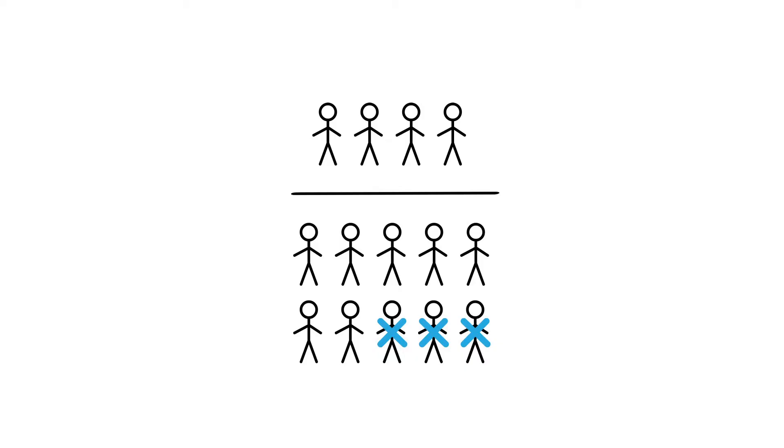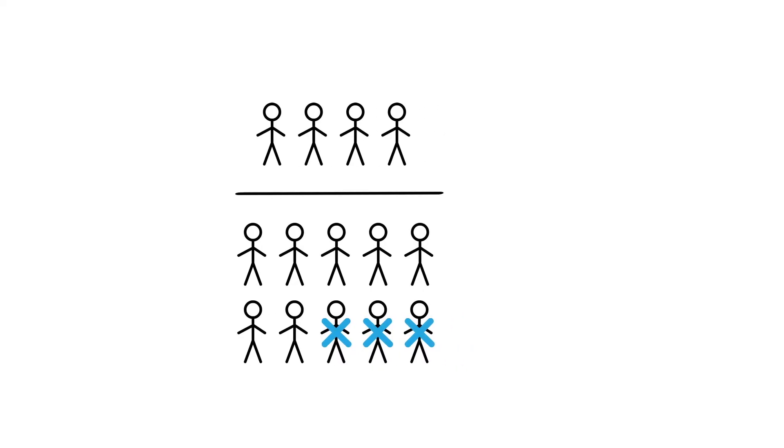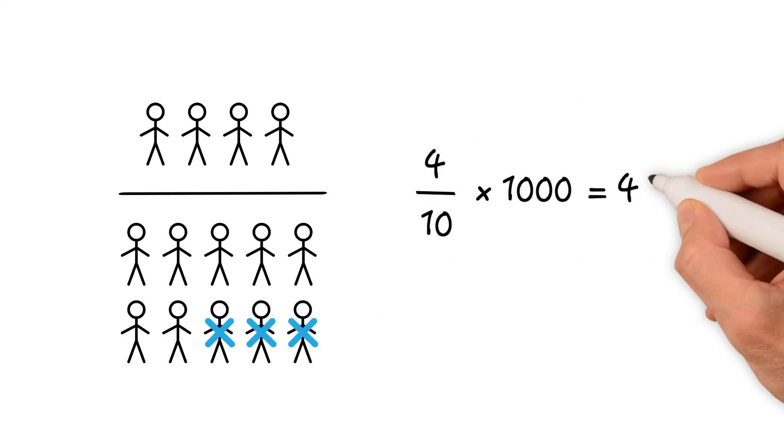they would no longer have the potential to become part of the numerator. So instead of 4 divided by 10, it would now be 4 divided by 7 times 1000, equals a new fictitious incidence rate of 570 per 1000. Now what about prevalence?